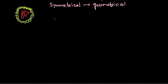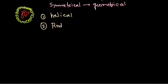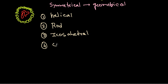Usually four different kinds of structure can be seen for viruses. One is helical, second one is rod-shaped, third one is icosahedral, and the fourth one is a cone-like structure.